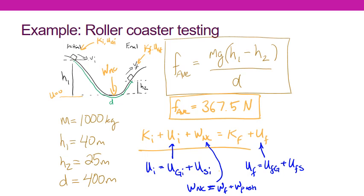This is an extension of energy conservation with only conservative forces. When all we have are conservative forces, the non-conservative work term is just zero — so this energy conservation equation with non-conservative work is actually the more general form. Hopefully this gives you an idea of how to handle non-conservative work and solve energy conservation problems involving non-conservative forces. I'll see you in class tomorrow.